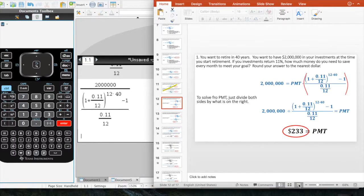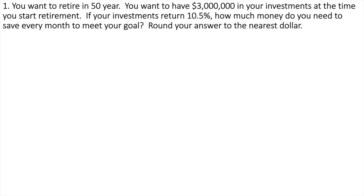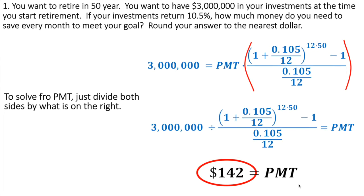So we did that one and found out it was $233. Now I want you to solve one just like it: find out what your monthly payment has to be to retire in 50 years at $3 million. Push pause, work through it just like the problem we just did, then come back and push play. The answer should have been $142 a month. So if you want to retire with $3 million, $142 a month is what it's going to cost you.